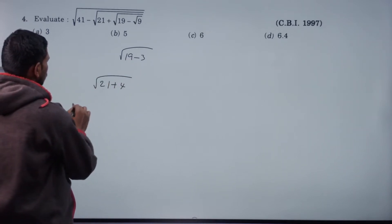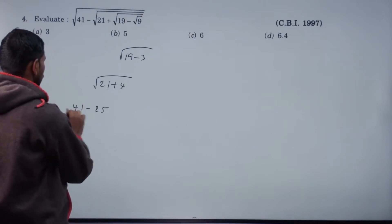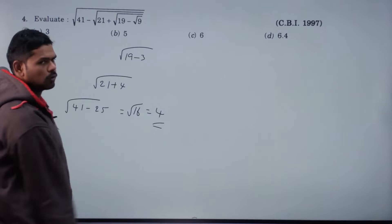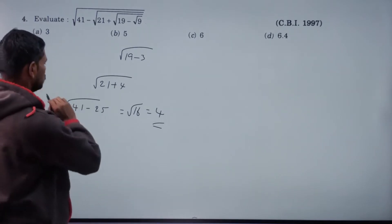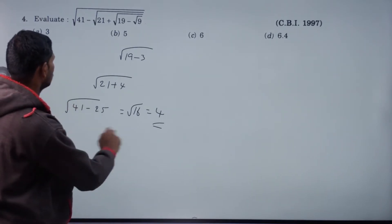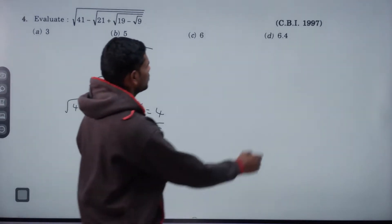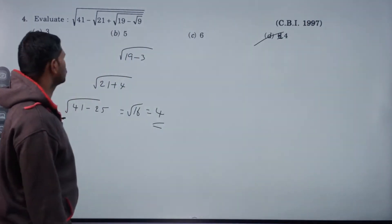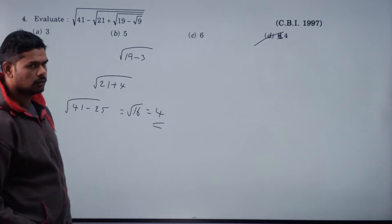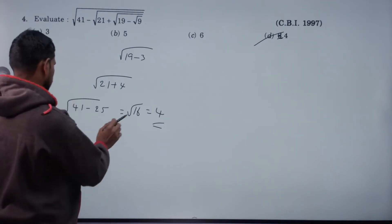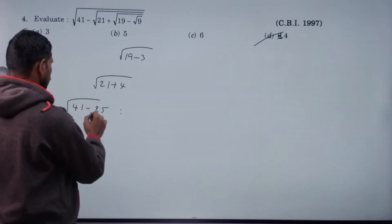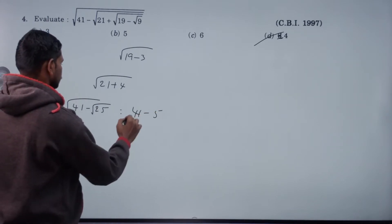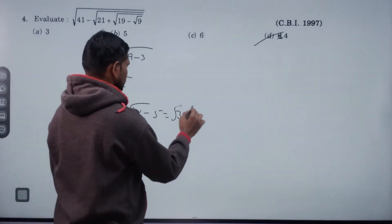41 minus 25, root 16, 4. 41 minus root 25: 41 minus 5 equals 36, exactly 6. Answer 6.